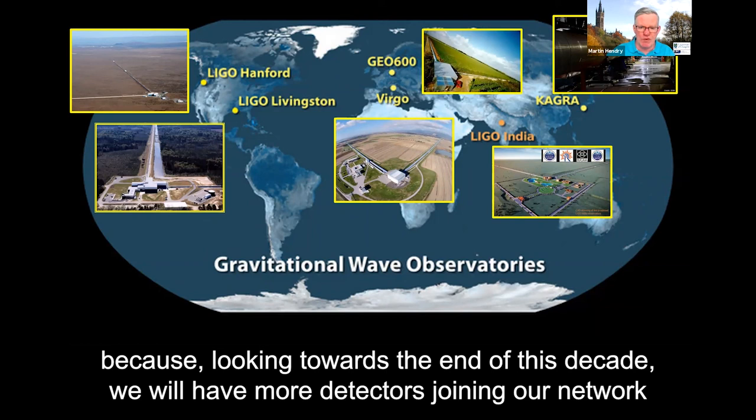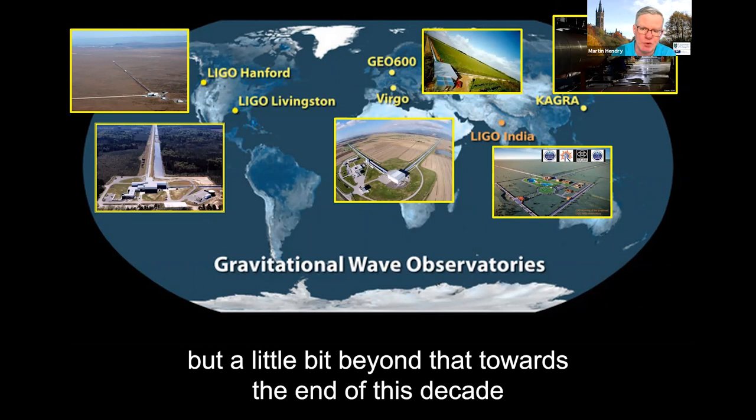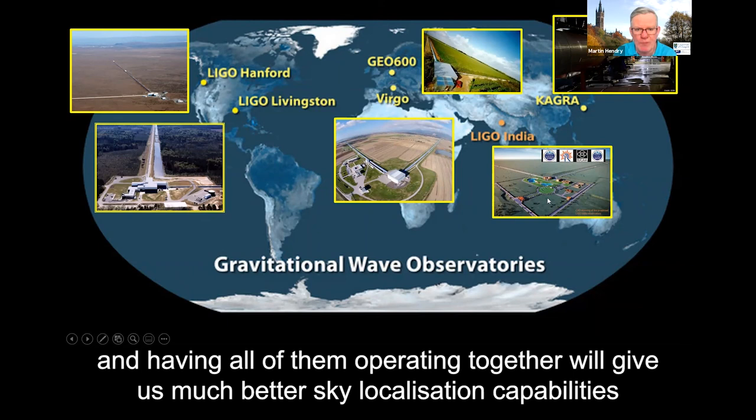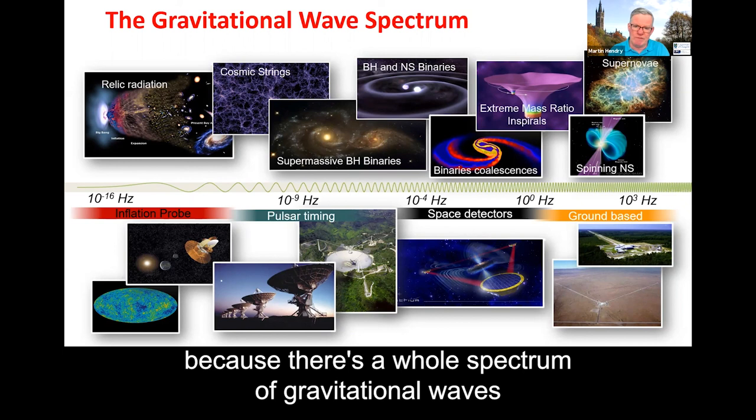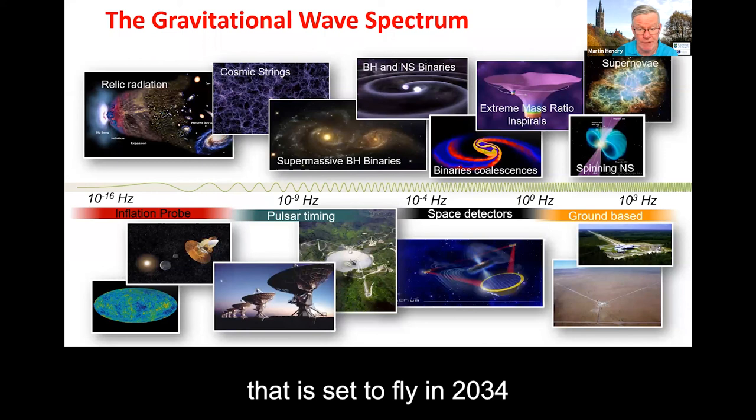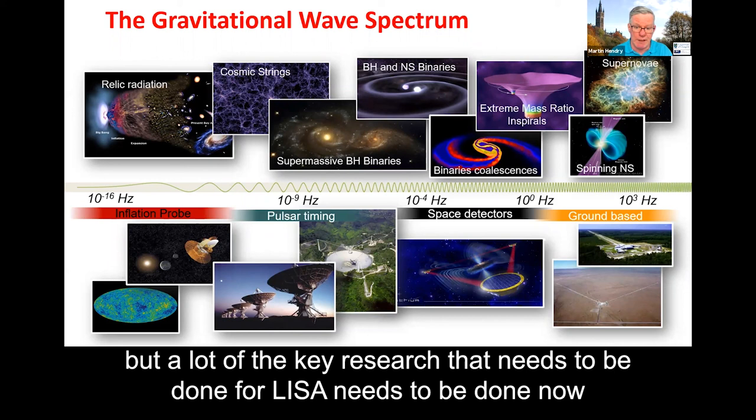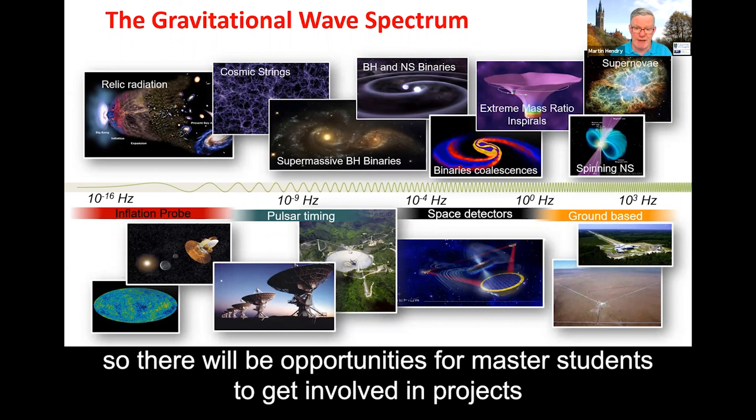Because looking towards the end of this decade, we will have more detectors joining our network. Kagra in Japan that I mentioned some time ago, Kagra will begin its operations in 2022. But a little bit beyond that, towards the end of this decade, we'll have another detector LIGO India. And having all of them operating together will give us much better sky localization capabilities. The other thing to note is that the ground-based detectors that have already borne such fantastic results, well, it doesn't stop there, because there's a whole spectrum of gravitational waves. And Glasgow has also got a leading role in developing the spaceborne detector LISA that is set to fly in 2034. Now that might seem a long way off, but a lot of the key research that needs to be done for LISA needs to be done now. So there will be opportunities for master's students to get involved in projects, laying the foundations for the LISA science that we will do in the 2030s.